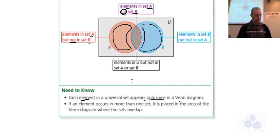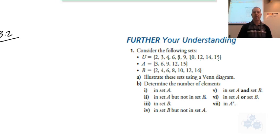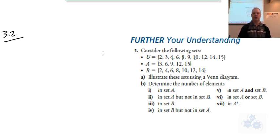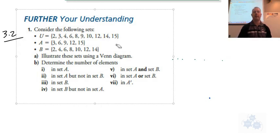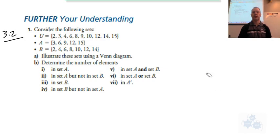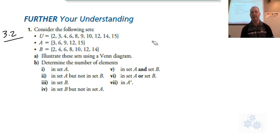Now let's go over some of the assignment questions. Number one is on page 160. It says: consider the following sets. U is the set of numbers 2, 3, 4, 6, 8, 9, 10, 12, 14, and 15. A is 3, 6, 9, 12, and 15. And B is 2, 4, 6, 8, 10, 12, and 14. The question says: illustrate these sets using a Venn diagram.